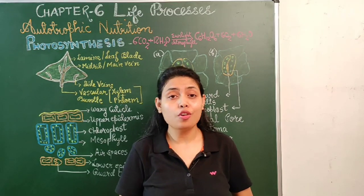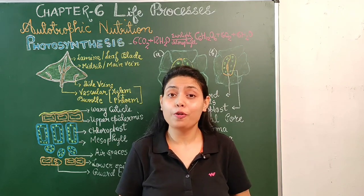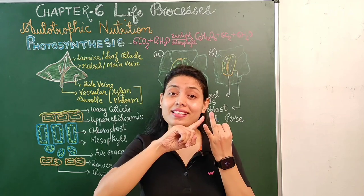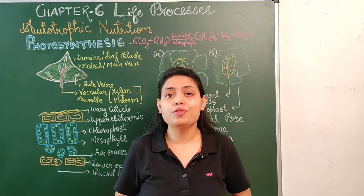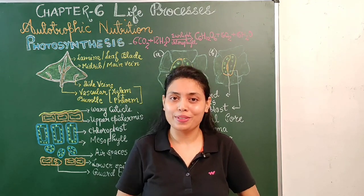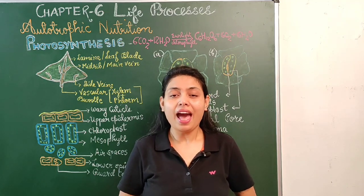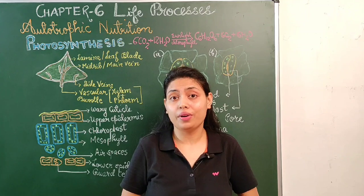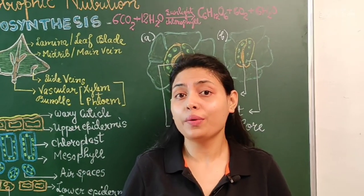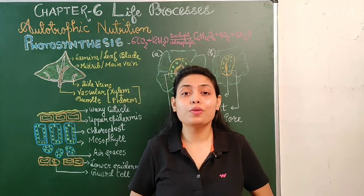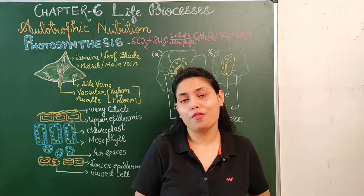Three important parts of a plant which are directly or indirectly involved in the process of photosynthesis are roots, stem, and leaves. The plant absorbs water from the soil through its roots, and this water is carried to the leaves by the stem. The place where photosynthesis occurs is the green leaves, which are also known as food factories of a plant, or the kitchen of a plant.